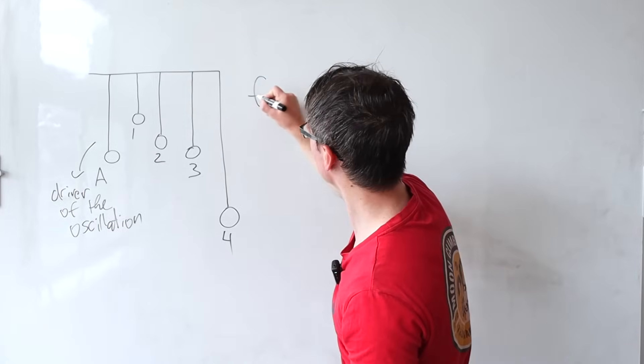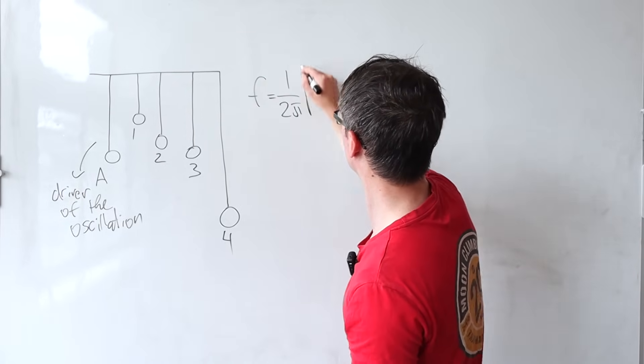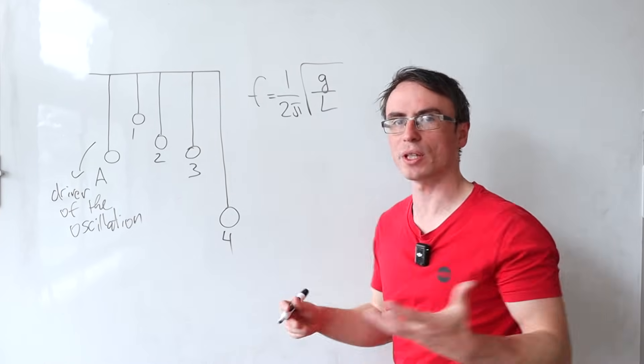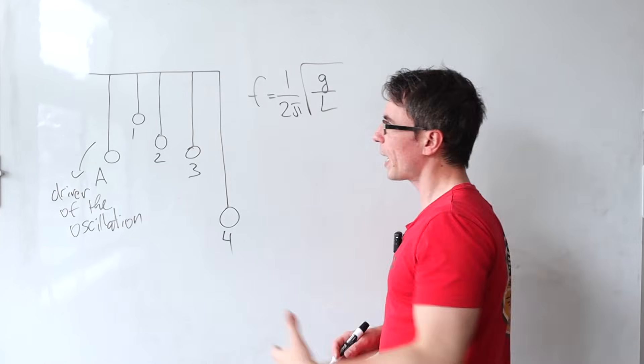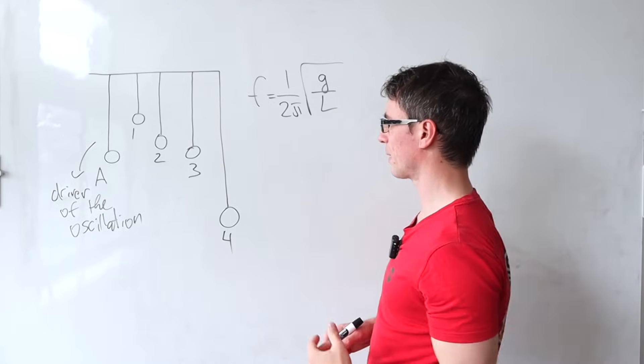And remember, the frequency of a pendulum will be given by 1 over 2 pi root of g over l, where l is the length and g is just the gravitational acceleration. So in practice, the frequency of a pendulum only depends on its length.